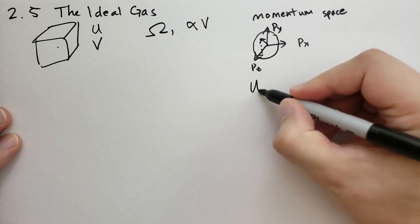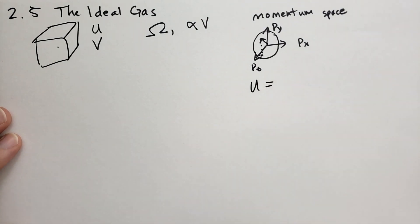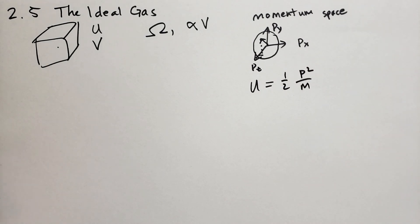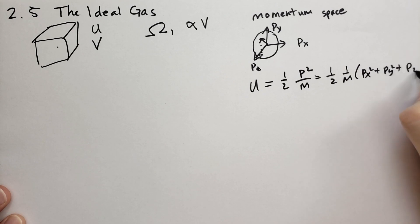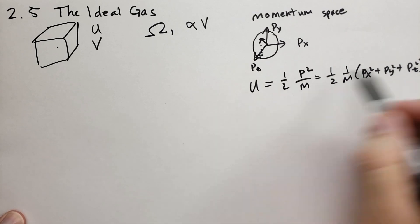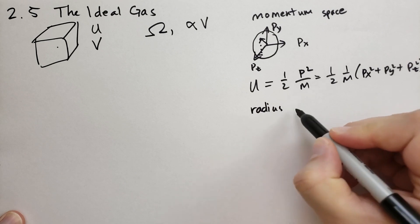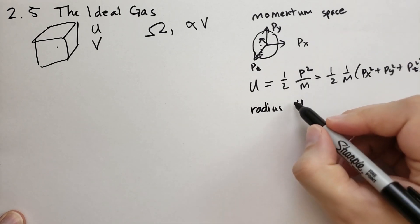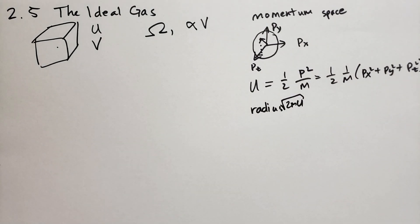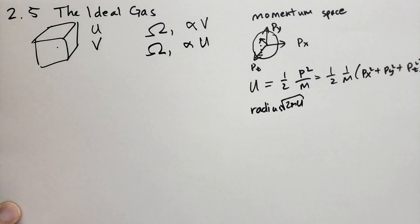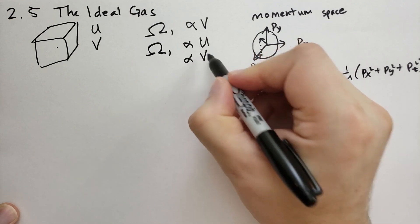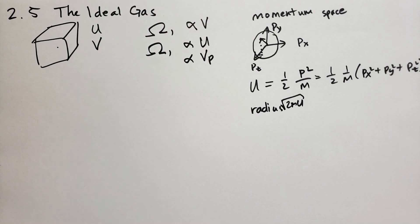To be specific, the internal energy is going to be completely kinetic energy, so we use U = (1/2)p²/m. We can rewrite this as (1/2)(1/m)(px² + py² + pz²). Solutions to this formula describe a sphere with radius equal to the square root of 2mU. So if the multiplicity is proportional to the energy, it is also proportional to the volume of this sphere in momentum space. Altogether, the multiplicity is proportional to the volume V times the volume of the sphere in momentum space.